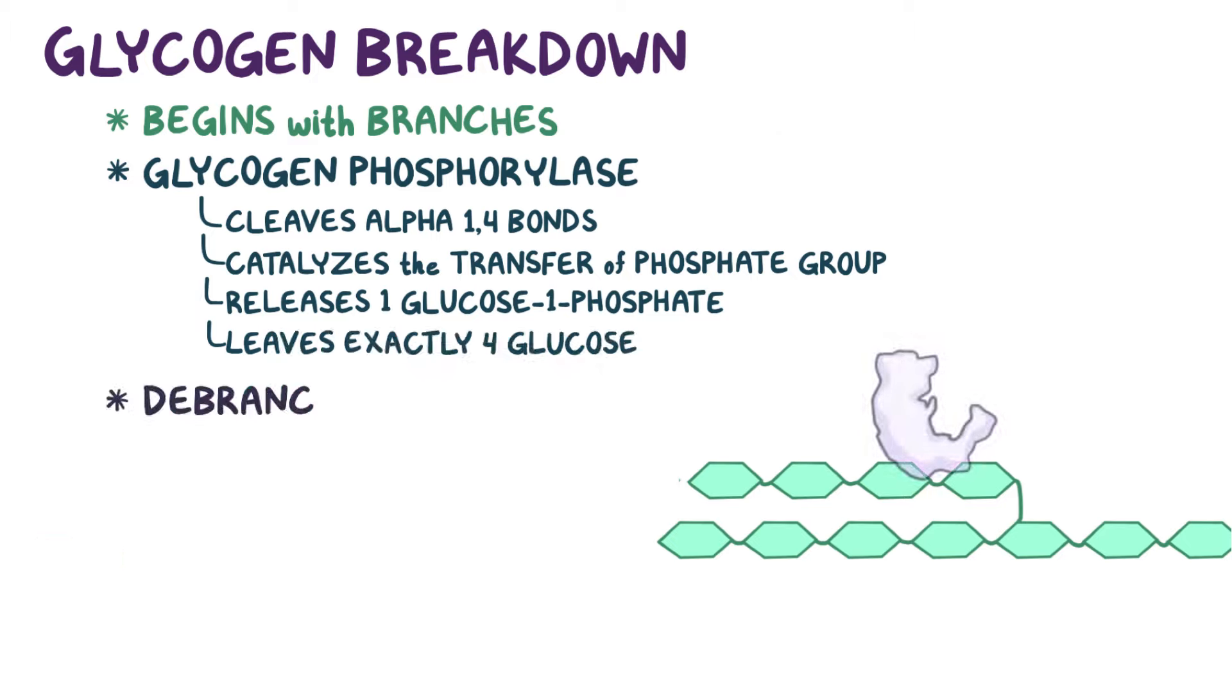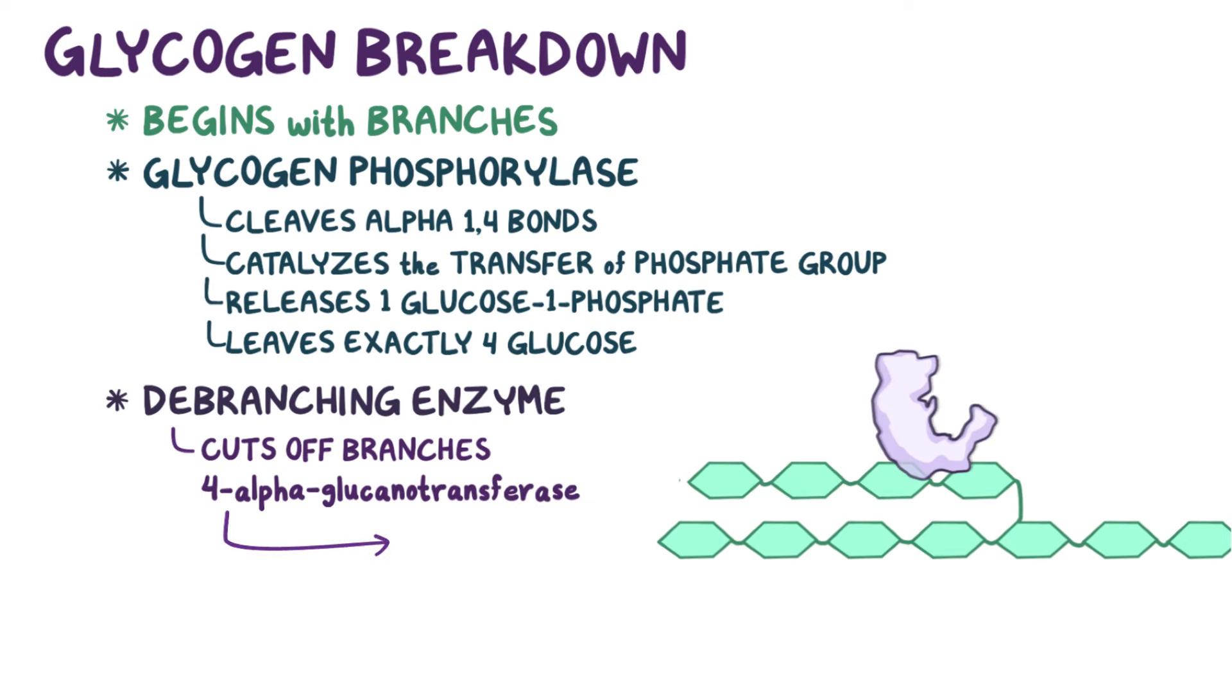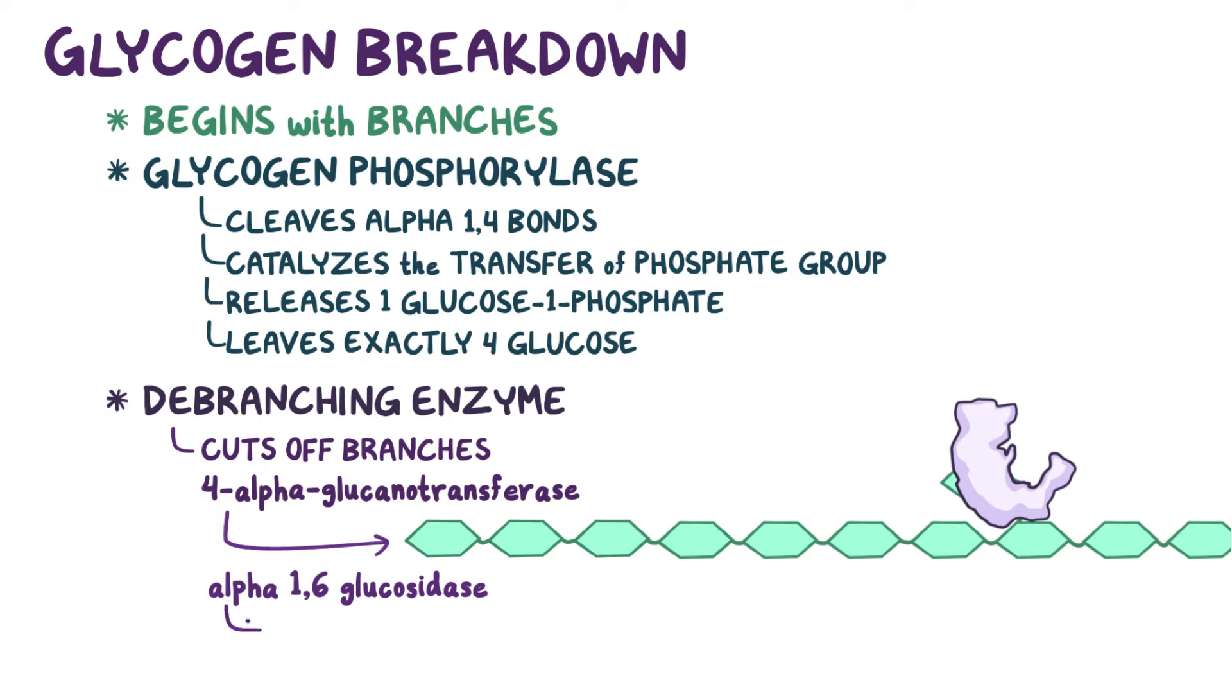Next, a debranching enzyme literally cuts off glycogen branches. It has a component called 4-alpha-glucanotransferase, which transfers 3 out of the 4 glucose molecules off of the branch and reattaches them to the linear glycogen chain instead, extending it as a result. The same debranching enzyme has another component known as alpha-1,6-glucosidase, which cleaves off the alpha-1,6-glycosidic bond and releases a free glucose.